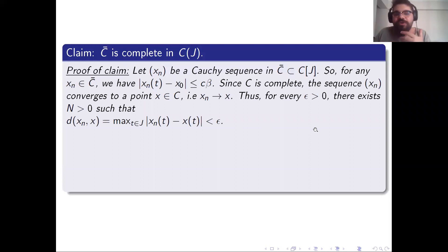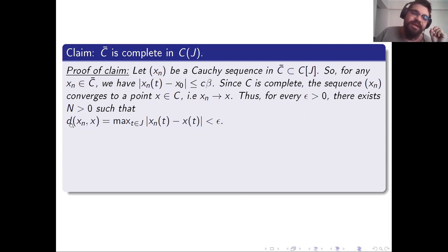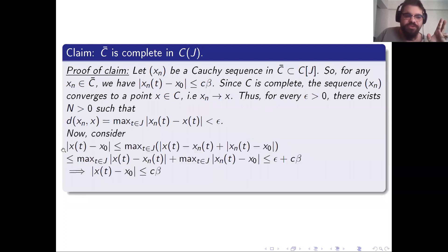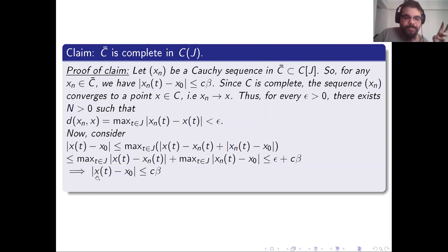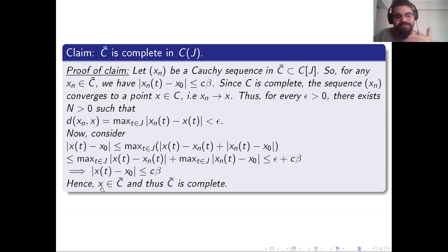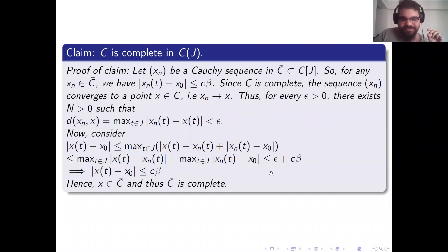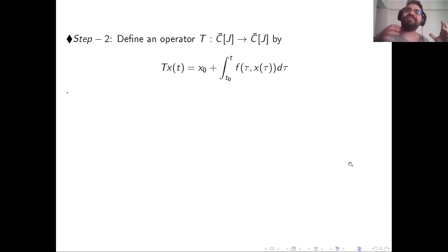I need to prove C̄ is complete in C(J). Take a Cauchy sequence in C̄; this sequence is also in C(J). For any x we have the relevant inequality since all elements lie in C̄. Since C(J) is complete, the sequence converges to a point x. By the epsilon definition, the distance is less than epsilon for all elements of the sequence. Considering the absolute value term we need to show C̄ is complete, by the triangle inequality we can show the difference is ≤ C · β, so the limit stays in C̄, and C̄ is complete.